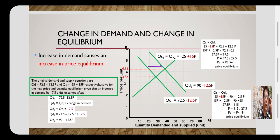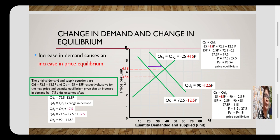Bringing all terms with P to the left side and constants to the right side, we have 15P + 12.5P = 90 + 25. Solving for P gives P = 115 ÷ 27.5, where 27.5 is the transposed coefficient from the left side. Therefore P = 4.18, and this serves as our new equilibrium price.